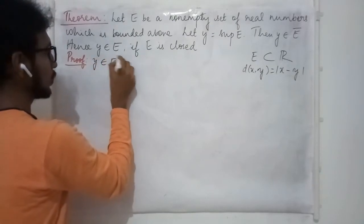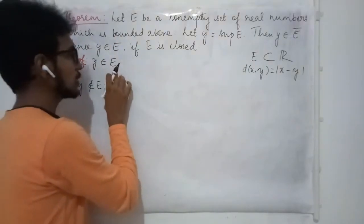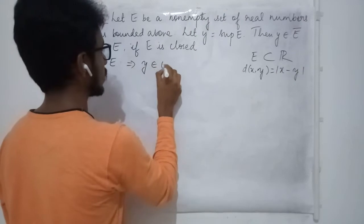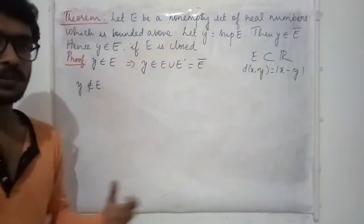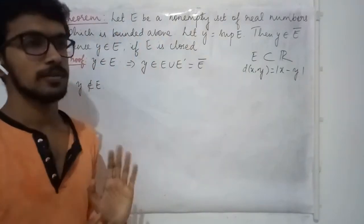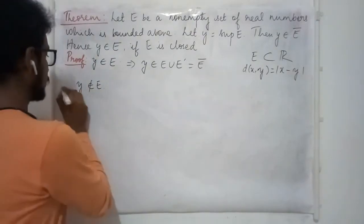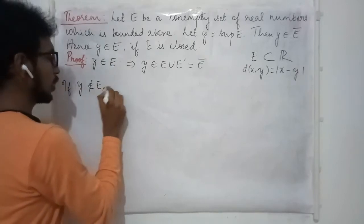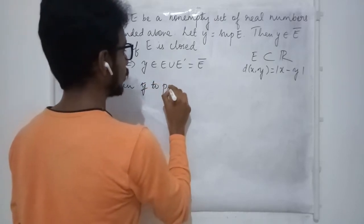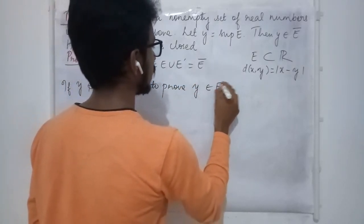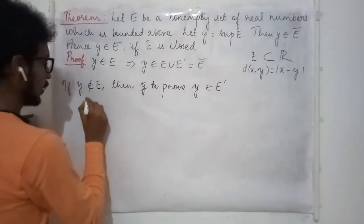There are two cases: y may be a member of E, or may not be a member of E. When y is a member of E, this implies y is a member of E-closure as well, so the proof is trivial. When y is not a member of E, we need to prove that y is a limit point of E.